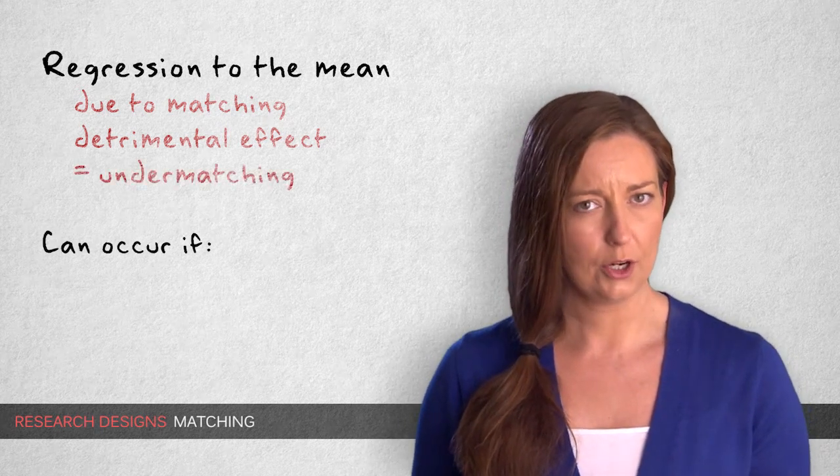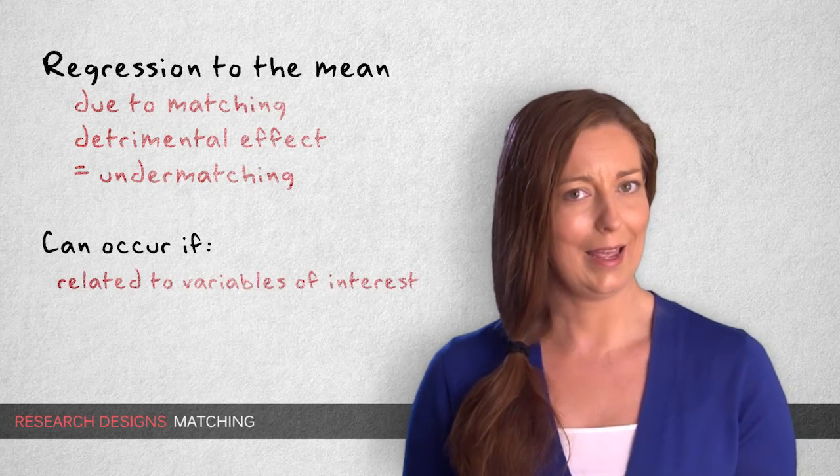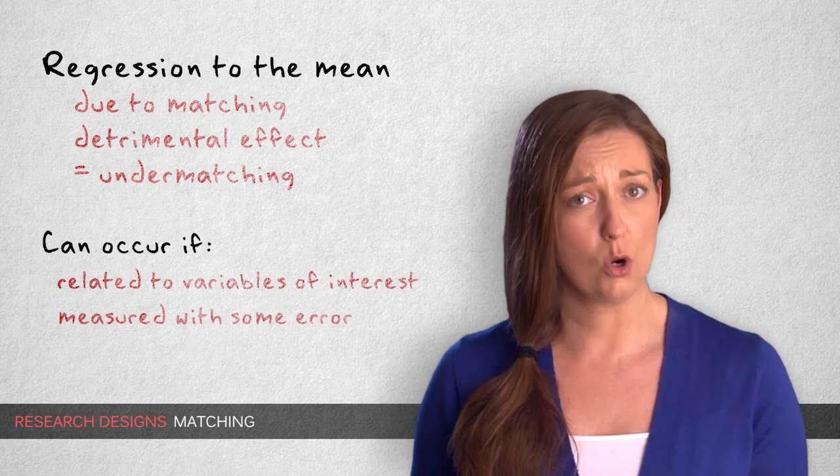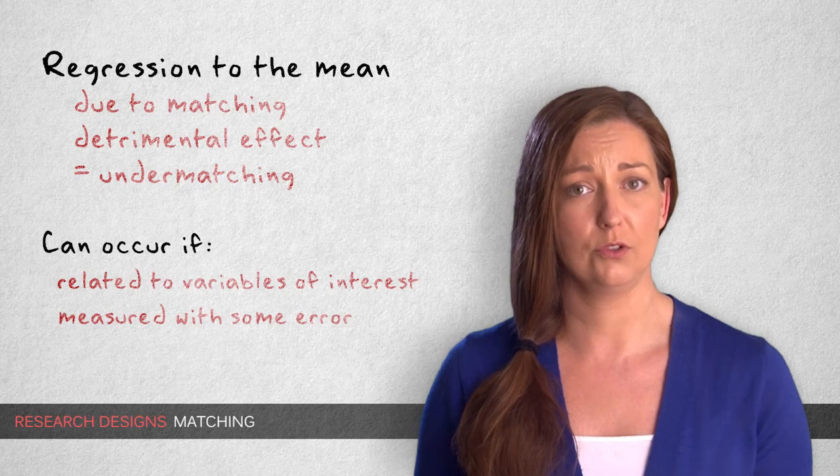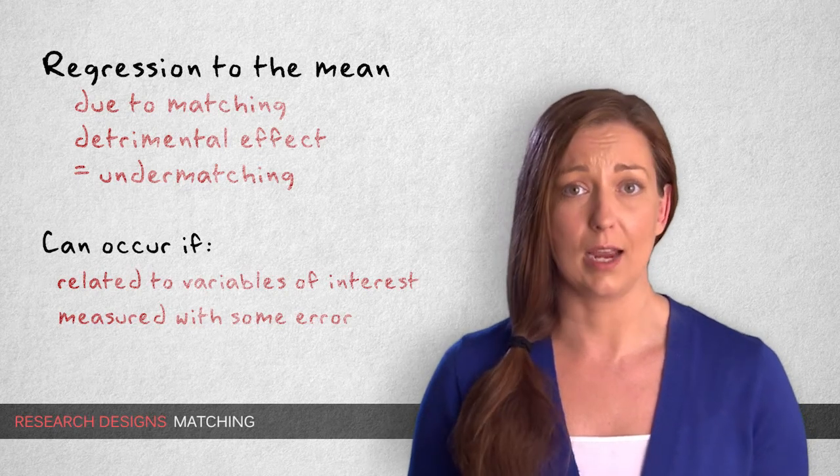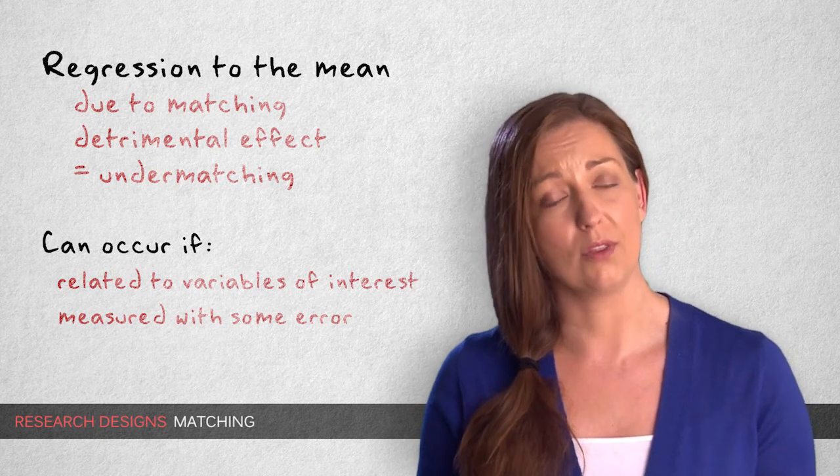This effect can only occur if the matching variable is related to the variables of interest, and is measured with a fair amount of error, which is unfortunately the case for most social and psychological variables. This of course does not apply to variables like age, sex, and educational level, which can be assessed almost without measurement error.